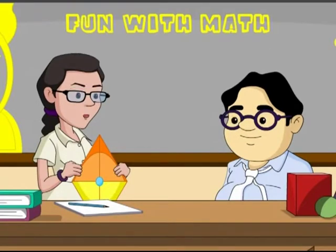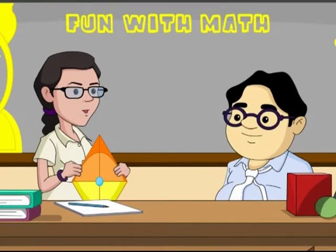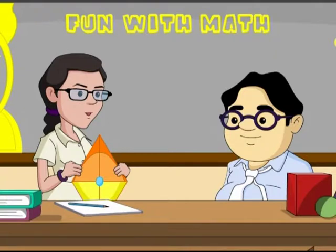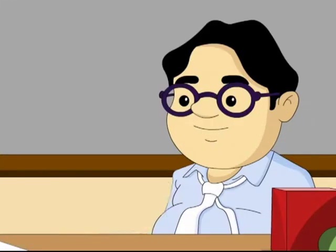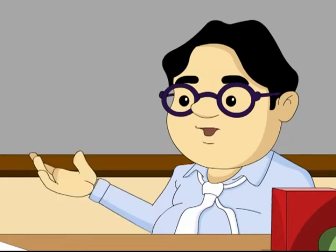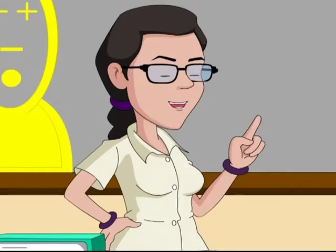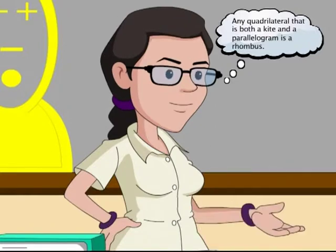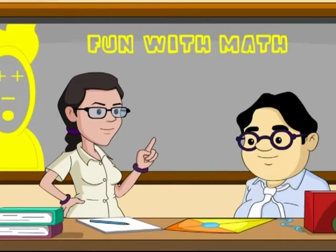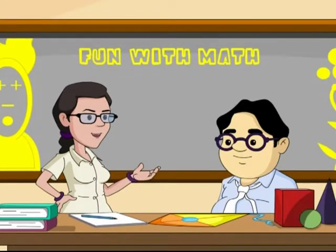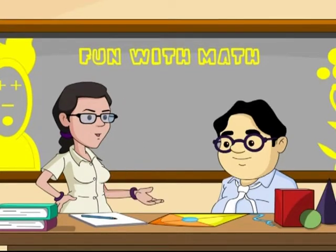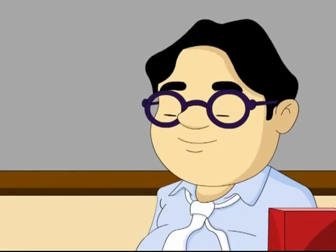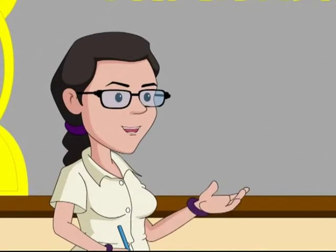Okay, see, a kite is a quadrilateral that has two pairs of equal adjacent sides. Also, if you recall, what's a parallelogram? A parallelogram has opposite sides parallel and equal. That's right. So any quadrilateral that is both a kite and a parallelogram is a rhombus. So now you got it why every rhombus is a kite but not the other way round.